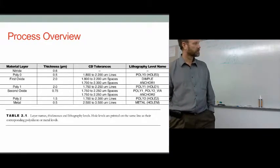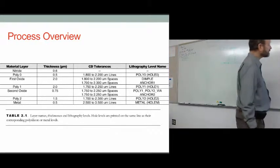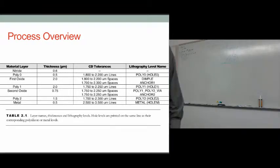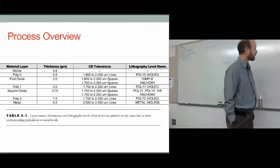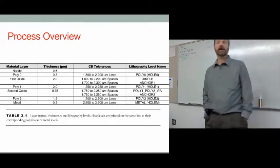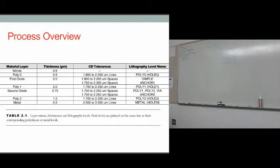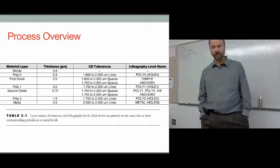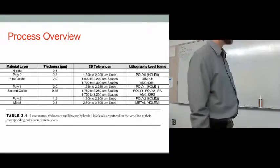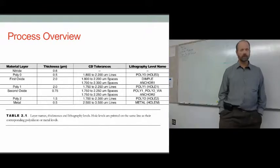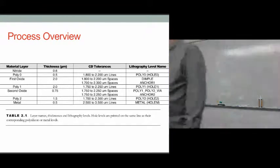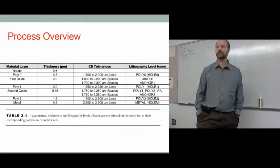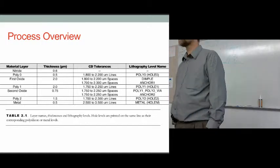Poly-2 is one and a half microns thick. Whatever you draw in poly layers will be a structure or space; whatever you draw in oxide layers will be a hole. Metal is a half micron, and you can decorate poly-2 with metal — for example, making a gradient on a moving hinge component for a monochromator. These layer thicknesses are your reference when drawing, making sure you're not creating structures smaller than the listed minimums.